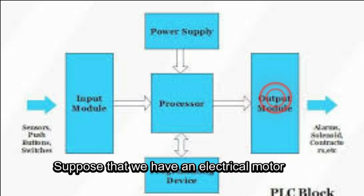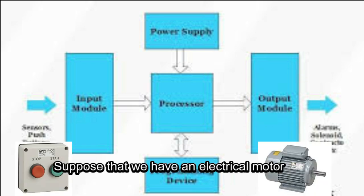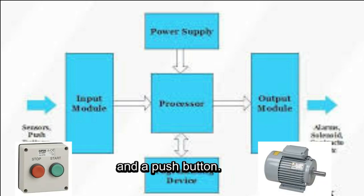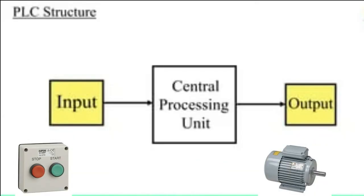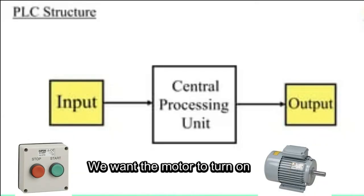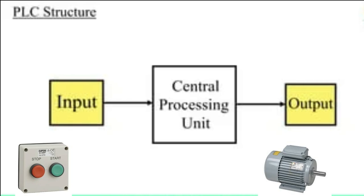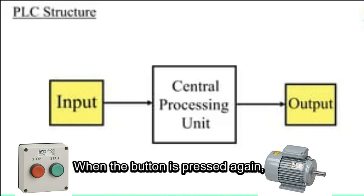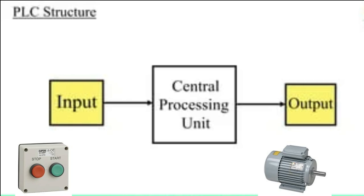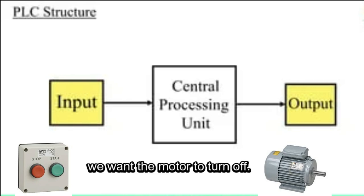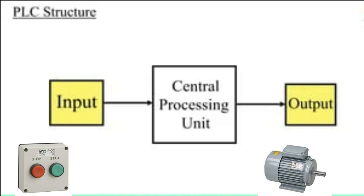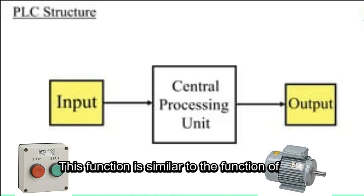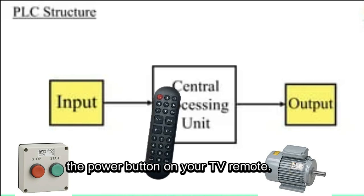Suppose that we have an electrical motor and a push button. We want the motor to turn on when the button is pressed, and when the button is pressed again, we want the motor to turn off. This function is similar to the function of the power button on your TV remote.